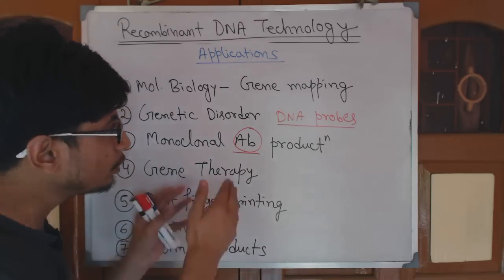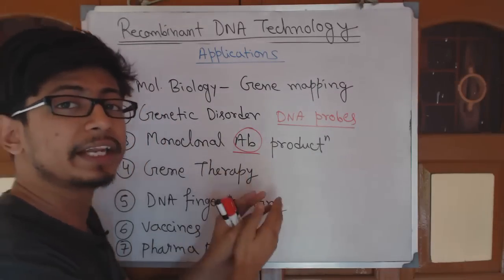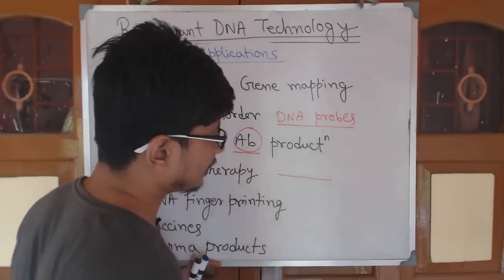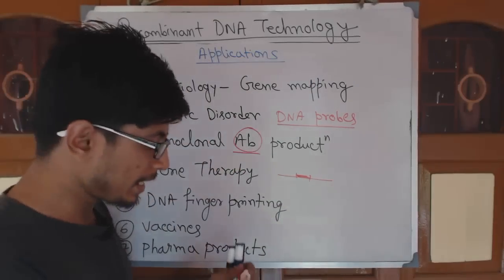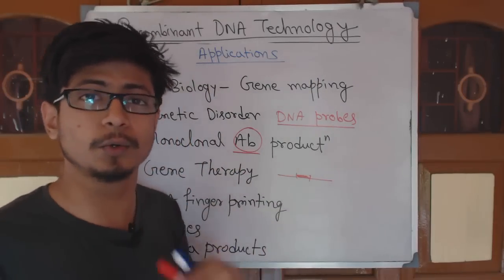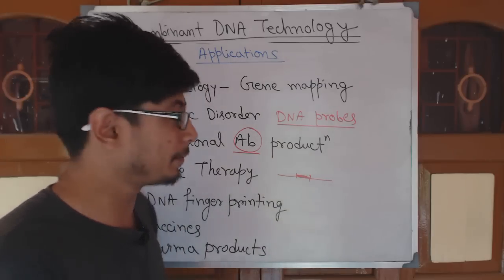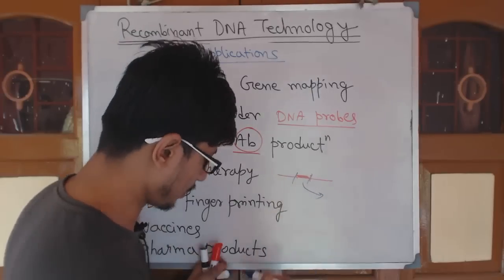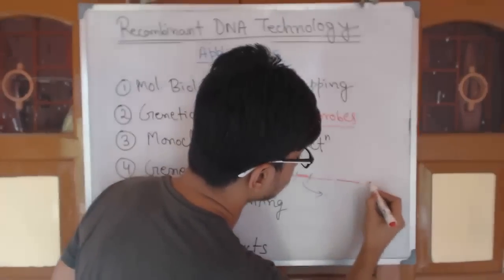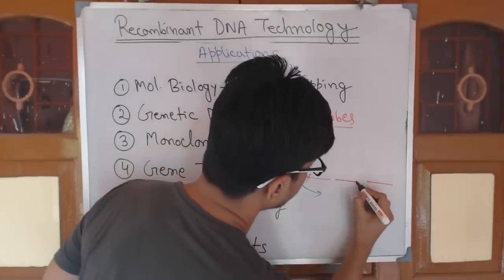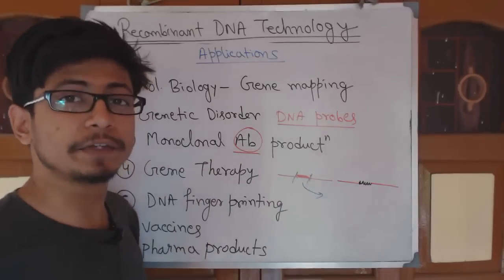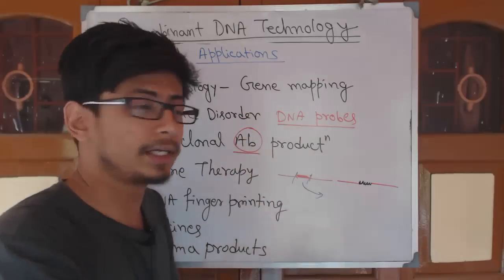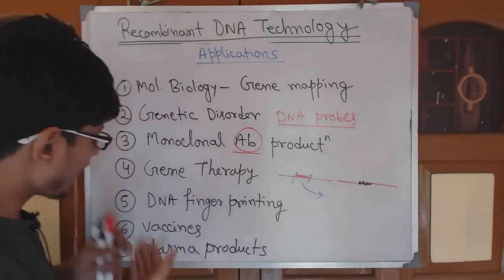The fourth application is gene therapy. If we have a faulty DNA in our body, we can substitute it by cutting it out and replacing that region with a better copy of the same gene inserted from outside. This can be achieved using recombinant DNA technology, because we need to remove the faulty DNA and place a new, better DNA in its place.